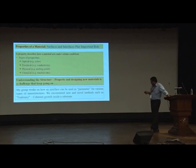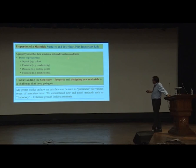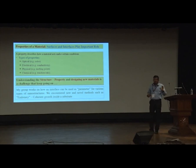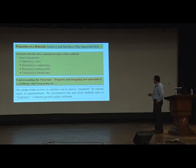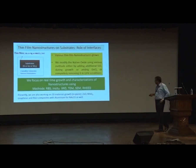The first few slides are also meant for students, so the experts please excuse me for being very basic. What we are trying to say is that we want to understand the structure-property relationship with interface as the main criteria. We make interface a parameter and try to make various types of nanostructures.